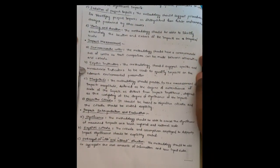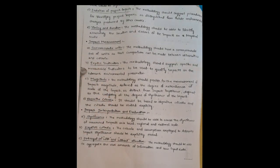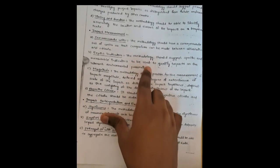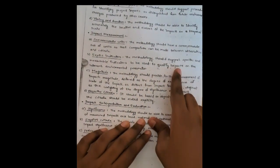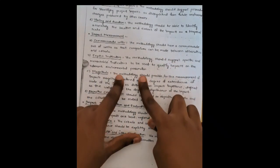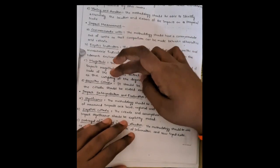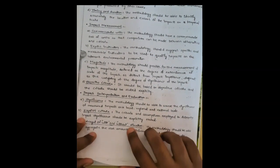Impact Measurements. The methodologies should have a commensurate set of units so that comparison can be made between alternatives and criteria. They should suggest specific and measurable indicators to qualify the impact on relevant environmental parameters. Magnitude: the number of the impact is what we calculate. Objective criteria should be based on explicitly stated criteria.